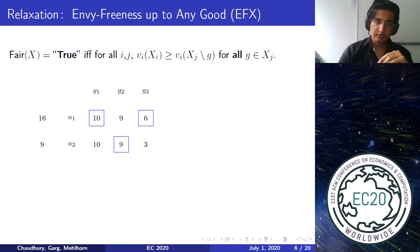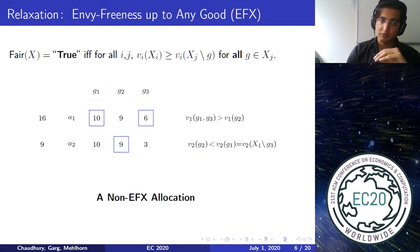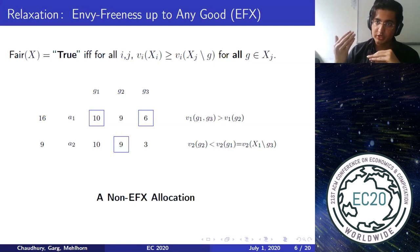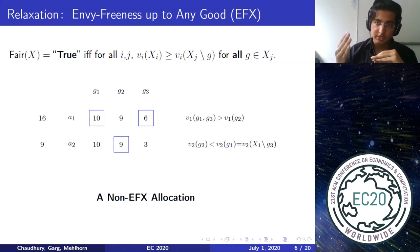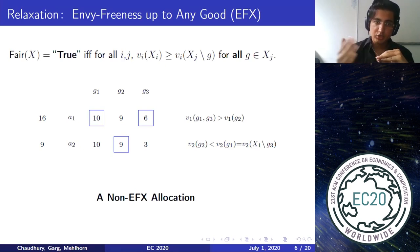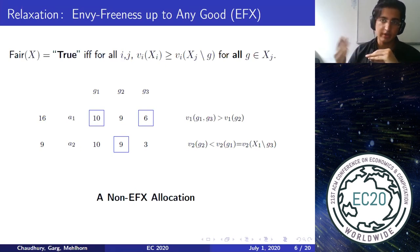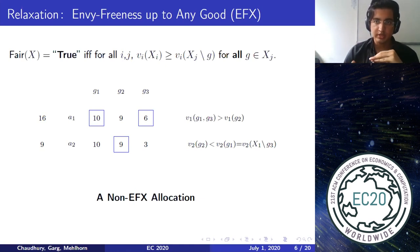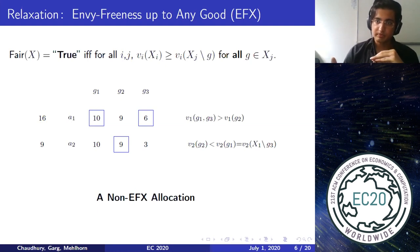Now consider this other example — this is not an EFX allocation. If you look at agent two, who has a valuation of nine, and remove good G3 from agent one's bundle, agent one is left with G1, and agent two still prefers G1 over G2. So even after removing G3 from agent one's bundle, agent two still envies agent one. As a result, this is not an EFX allocation.